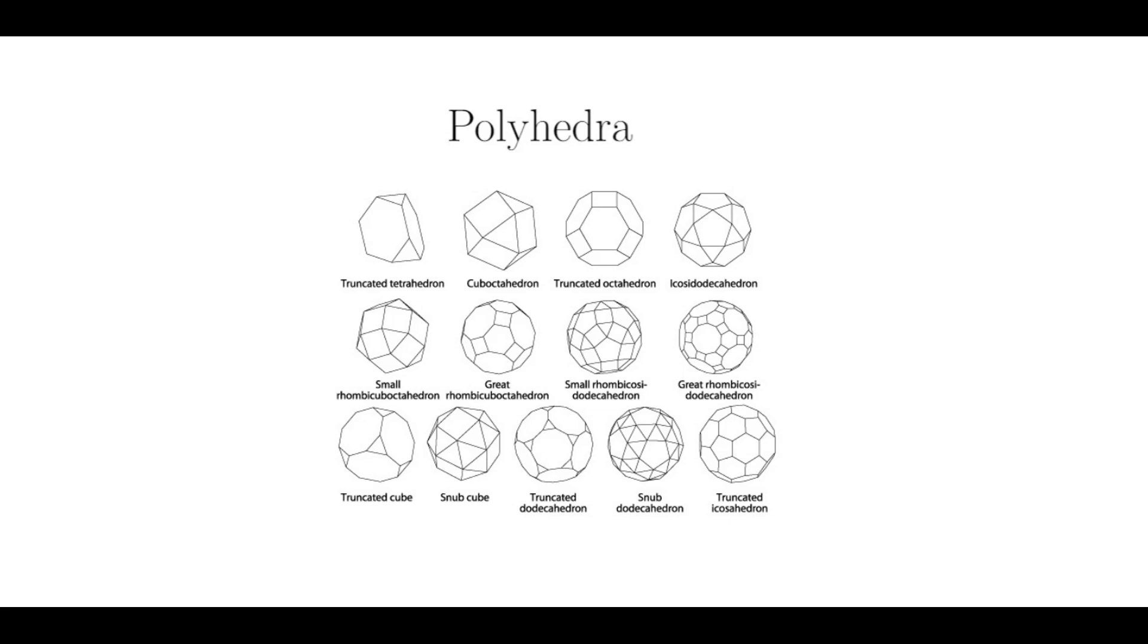And regular, meaning uniform length, area, angles, etc. throughout the shape. These special convex regular polyhedra are called the platonic solids. And surprisingly, there are only five of them.